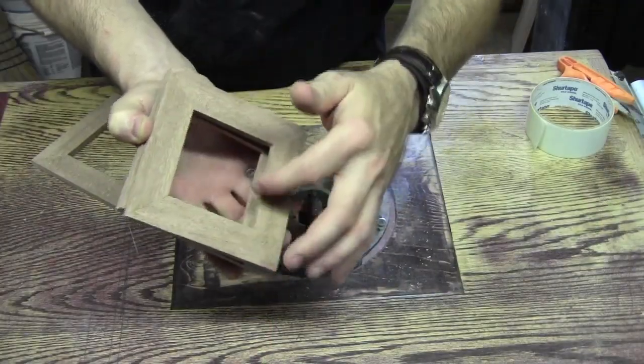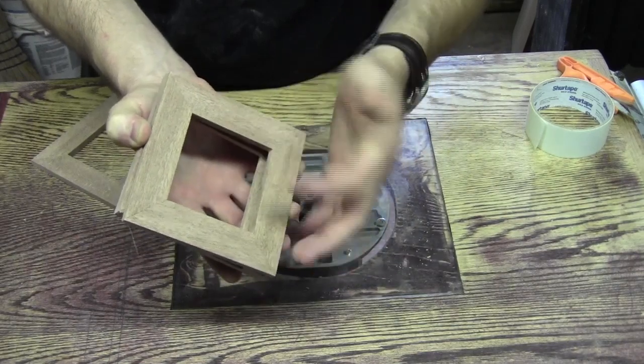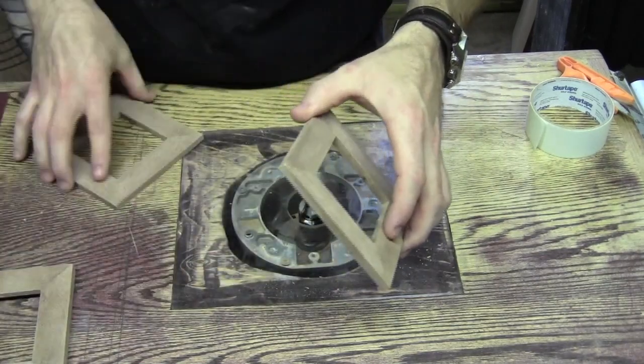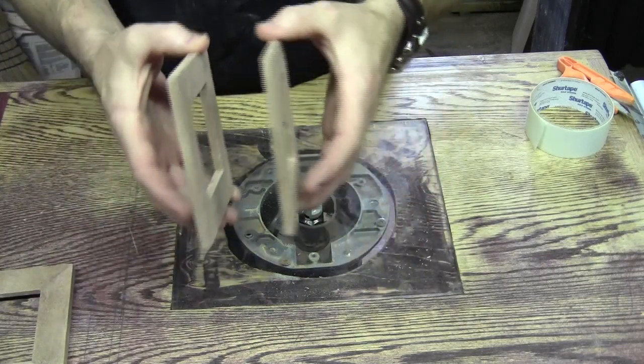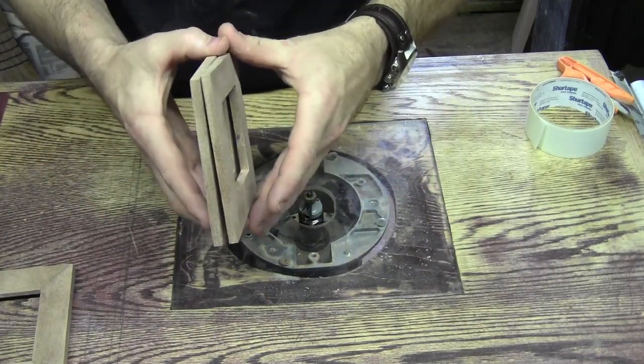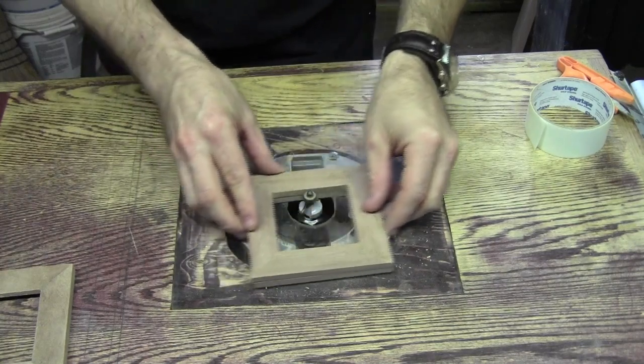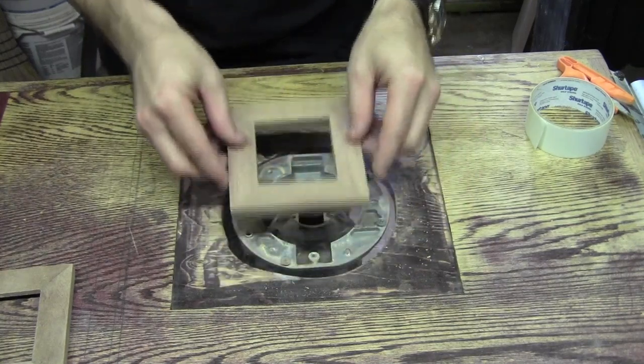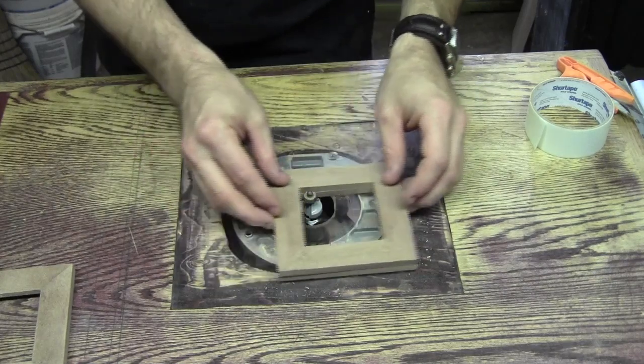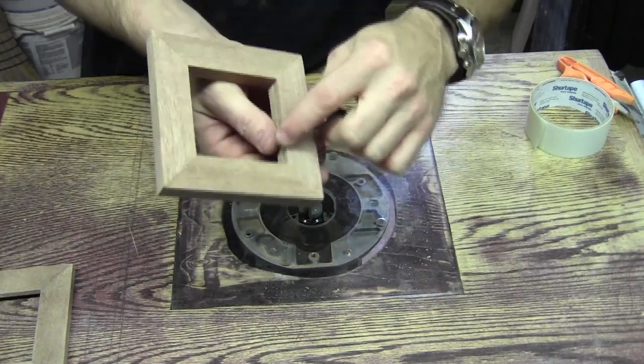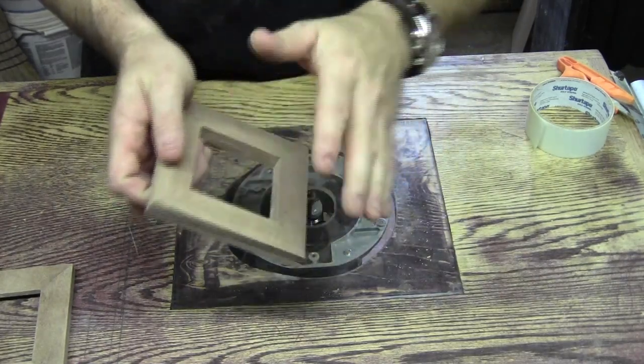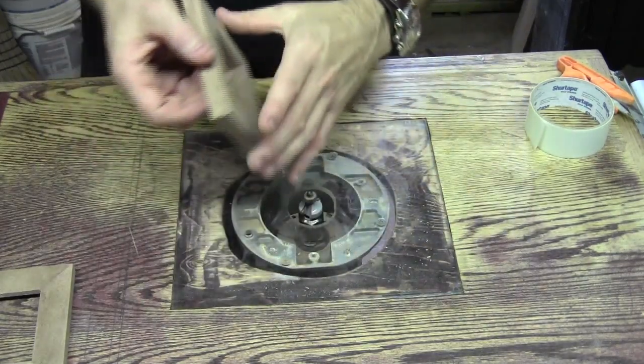I'm going to do a small little round over here where it rounds over into the glass. So I'm going to take all of my outside frame pieces and double side tape them together. That way, I've got a small little eighth inch round over bit here and I have something to run across the bearing. I could do one side and flip it over and do the outside, and that'll round over the outside of each of the four frame pieces.